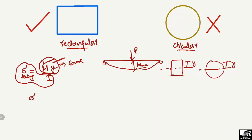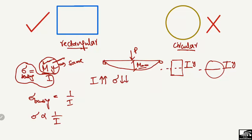Bending stress is inversely related to the moment of inertia — bending stress ∝ 1/I. This means if the moment of inertia of the beam increases, bending stresses decrease, and we can provide less reinforcement. Similarly, if the moment of inertia decreases, bending stresses increase and we need more reinforcement.